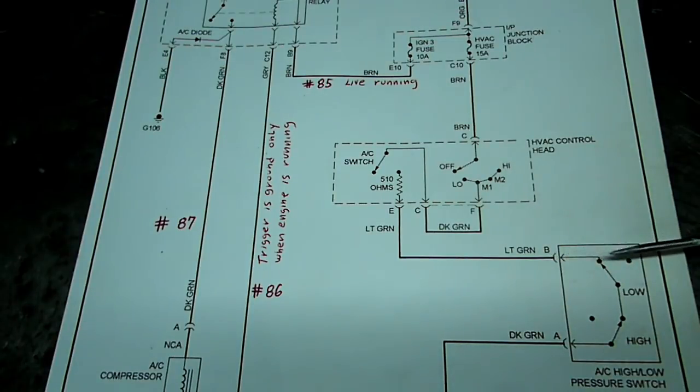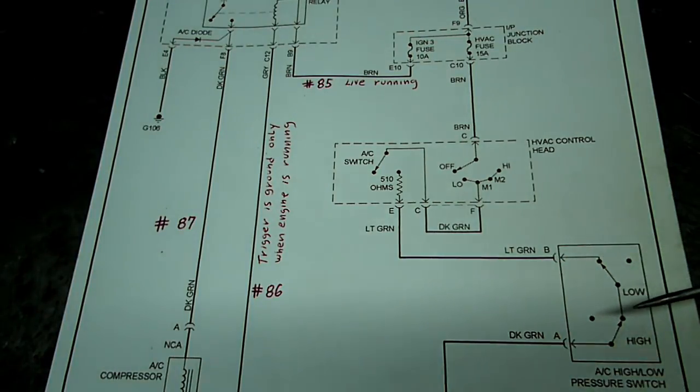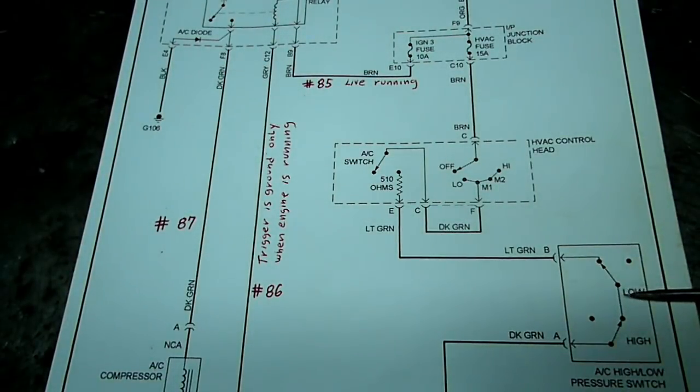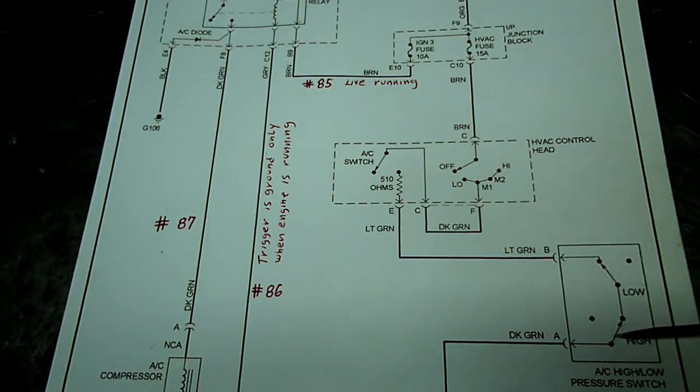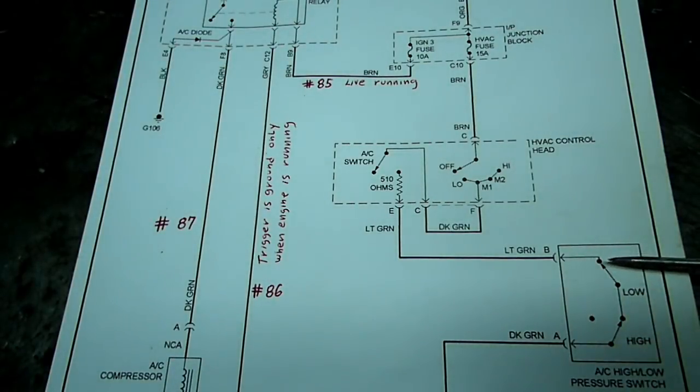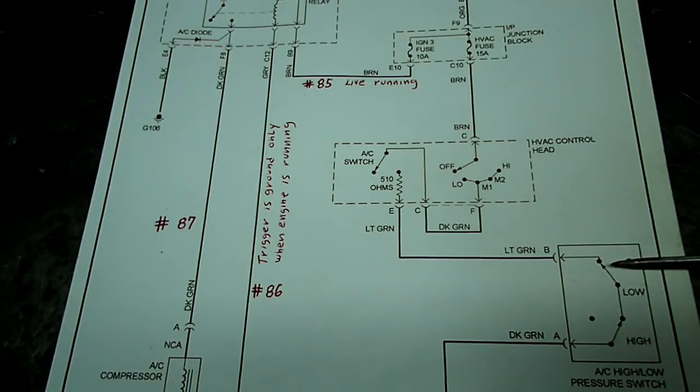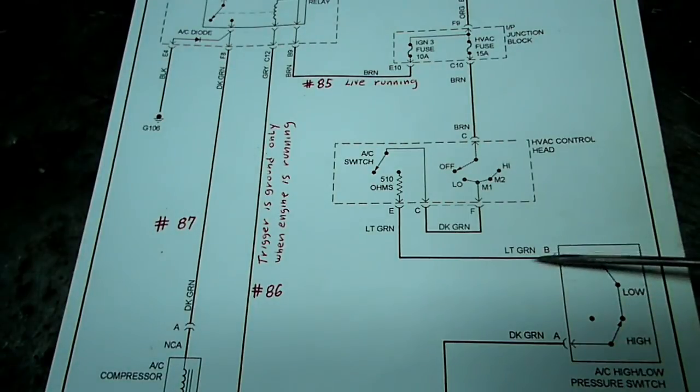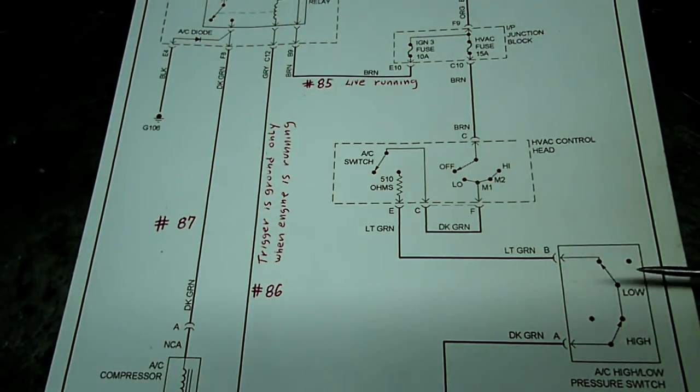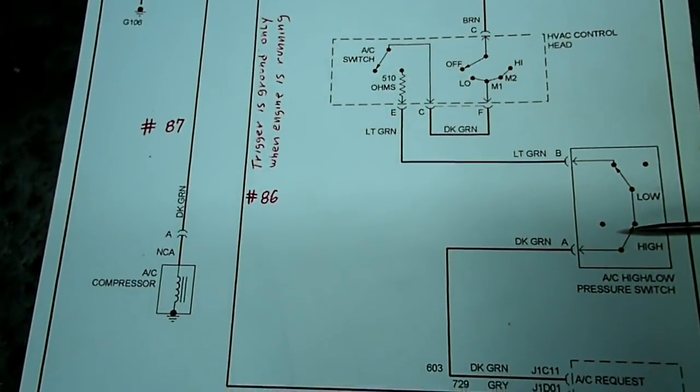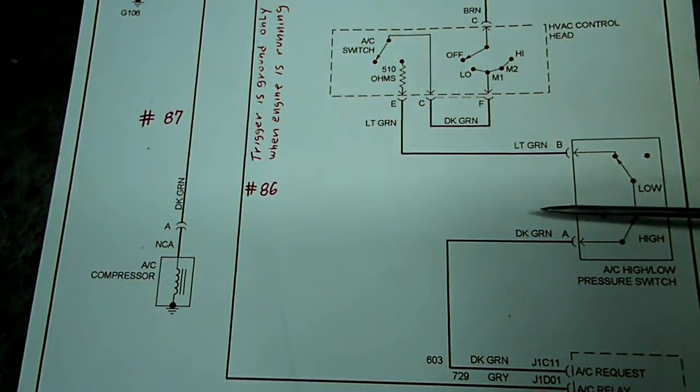And then it goes into the pressure switch. If the pressure switch is closed because the pressure in the system is where it should be, then it will flow out. A lot of times you have a leak in your system and that switch is open, and voltage will stop right there. Alright, let's say if the switch is closed, then the voltage will come out of the switch.